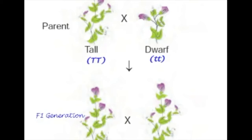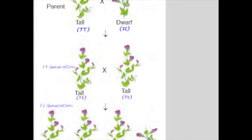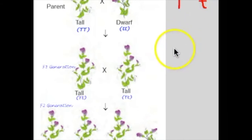The Law of Segregation explains what Mendel had seen in the F1 generation when the tall plant was crossed with a short plant. The two hereditary factors in this case were the short and tall factors. Each individual in the F1 generation would have one of each factor, and as the tall factor is dominant to the short factor, all of the plants appeared tall. In describing genetic crosses, letters are used. The dominant factor is represented with a capital letter — T is used for tall — while the recessive factor is represented by the lowercase same letter, so a lowercase t in this example.